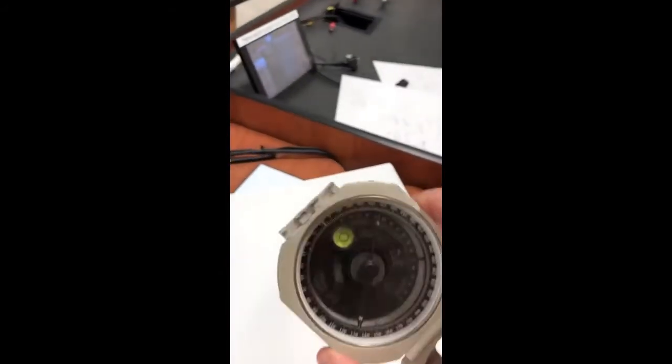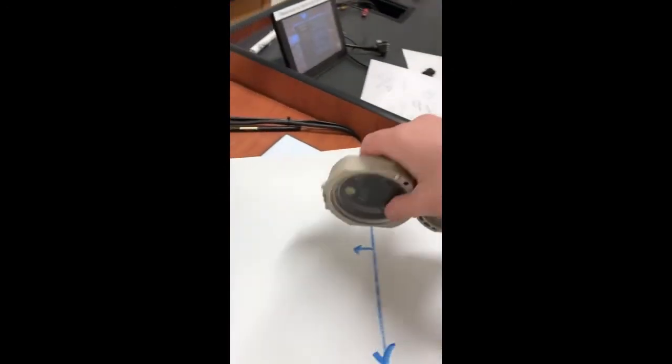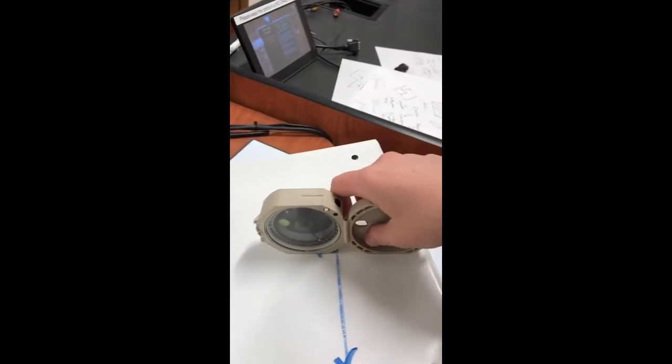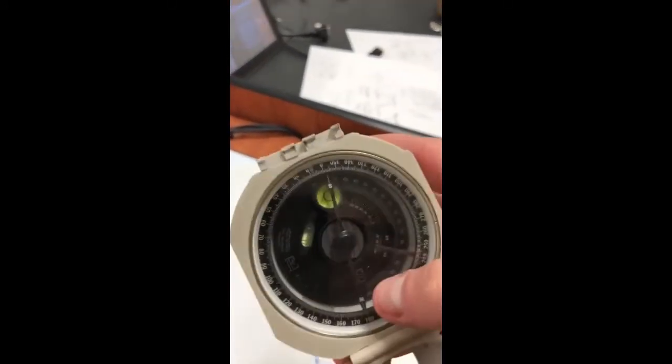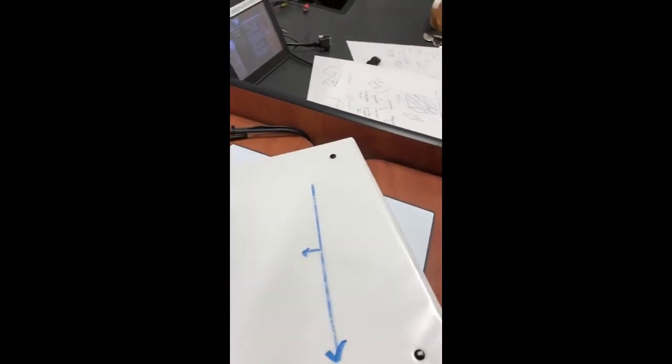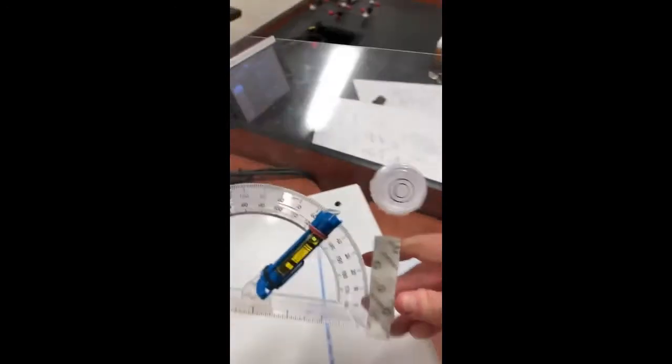So in the field, what you would do is you would use the fact that the Brunton, the edge of it is at a right angle. You'd rotate this down, and then you'd move your horizontal level, so this one, until the bubble's in the middle. We're going to show what that looks like in a bigger picture.